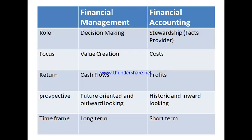Now what is the difference between financial management and financial accounting? This is a question asked many times in interviews. Where accounting is ending, our financial management begins. The difference: the role of financial management is that it helps you in taking decisions. For example, I have 5 lakh rupees — should I invest in a hotel or in another business like a department store? Where will I get more benefit? That decision-making process is where financial management helps you. Financial accounting is only a fact provider — it just makes accounts and balance sheets and tells you your position.